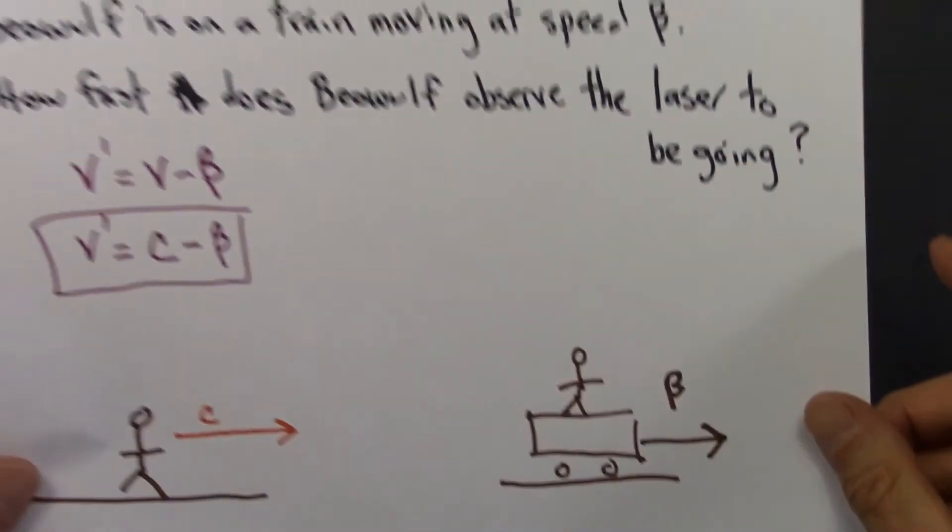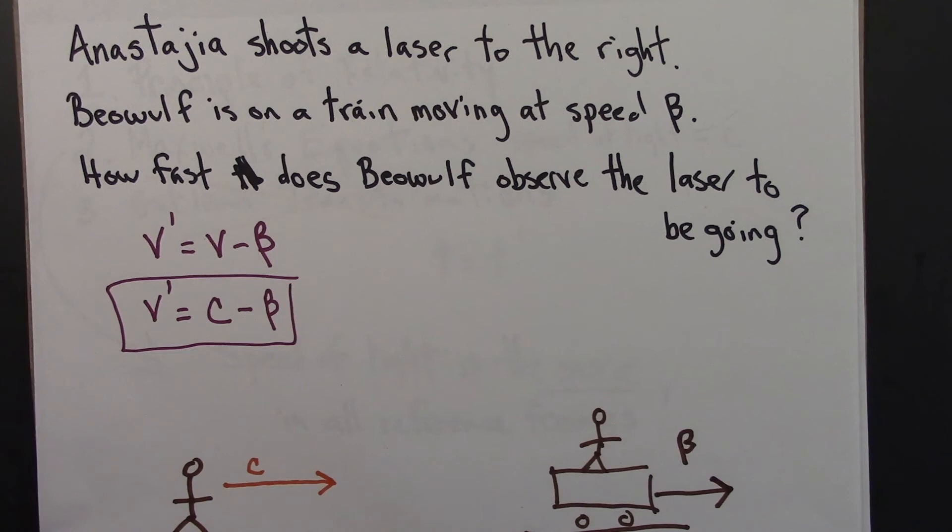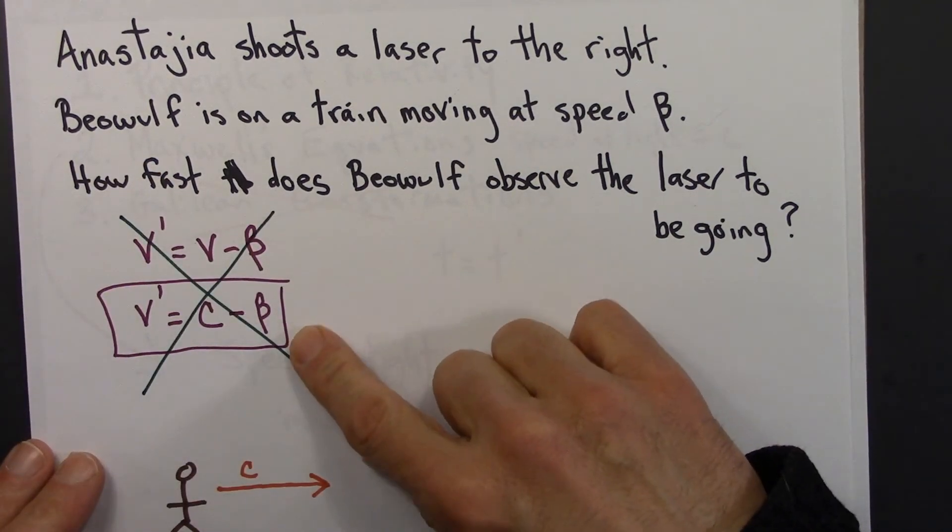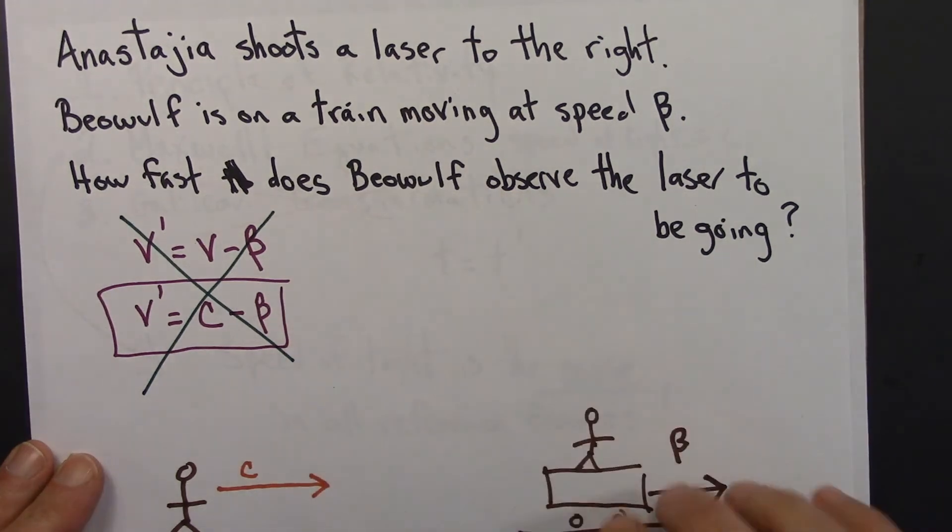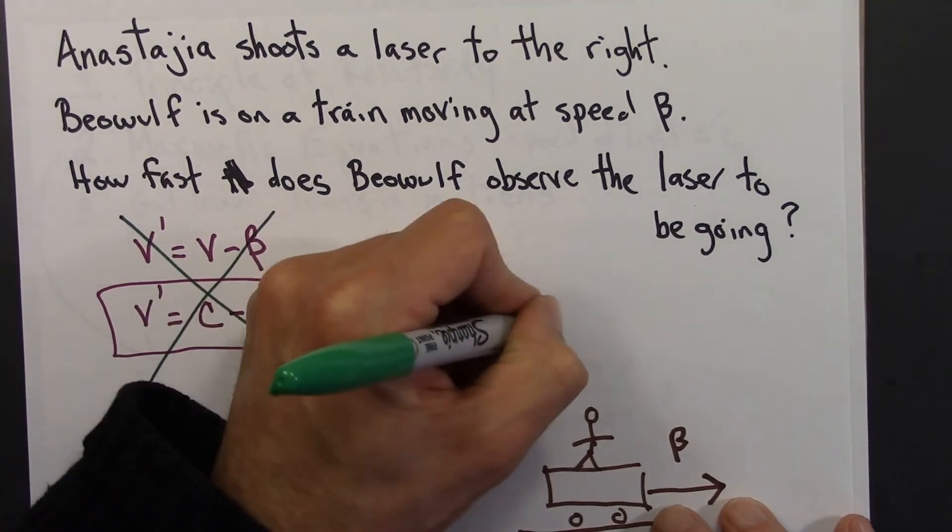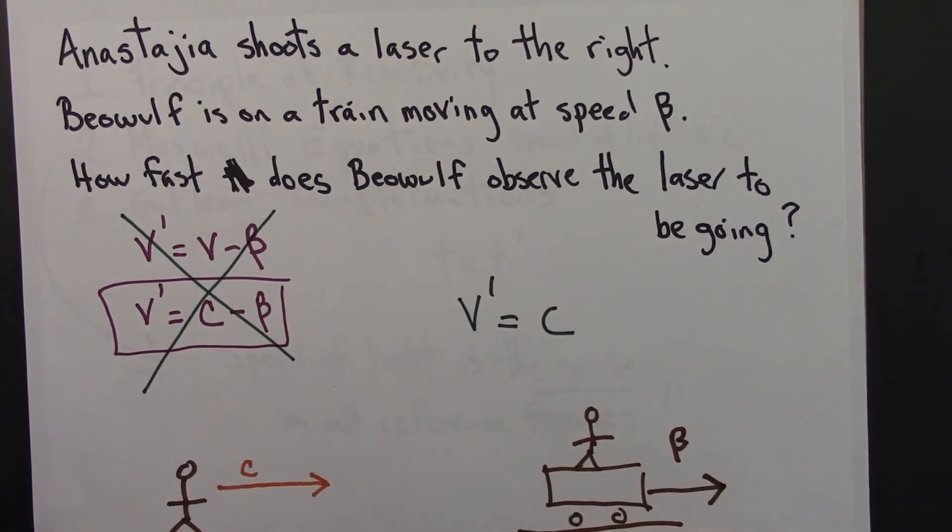And so what that means, going back to this example, is that this is wrong. The Galilean transformations are not right. And in fact, Beowulf would observe the speed of light at c, just like Anastasia would.